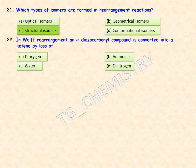In Wolff rearrangement, an alpha-diazo carbonyl compound is converted into a ketene by the loss of which group? Options are O₂, NH₃, H₂O, or N₂. The right answer is N₂ — option D.